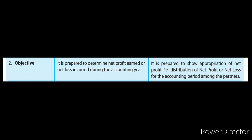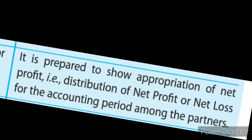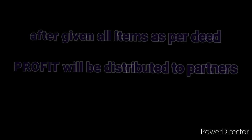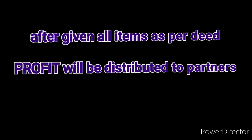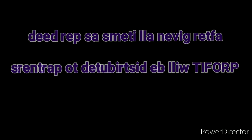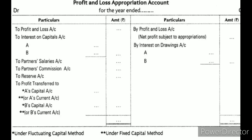The Profit and Loss Appropriation Account is prepared for the appropriation of net profit. The net profit is divided into many parts — such as salary, commission, interest on capital — and these are given to partners. Even net loss is distributed to the partners' capital accounts. So it is prepared for appropriation and distribution of net profit or net loss among the partners for the accounting period.